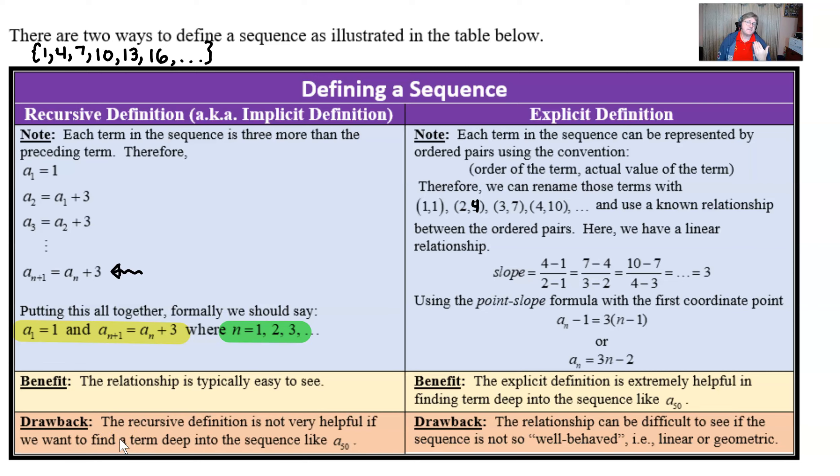But the drawback to recursive is that it's not very helpful if you want to find a term very deep into the sequence, like, say, the 50th term. We're just going to have to keep building this and building this because we probably need that 49th term.